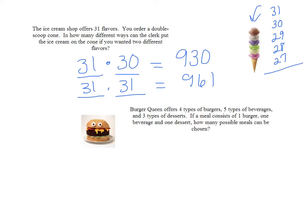Burger Queen, and I found this hamburger, I think he's cute, has four burgers, five beverages, and three desserts. If you can choose one of each, how many possible meals are there? Well, there's four times five times three, which is sixty.